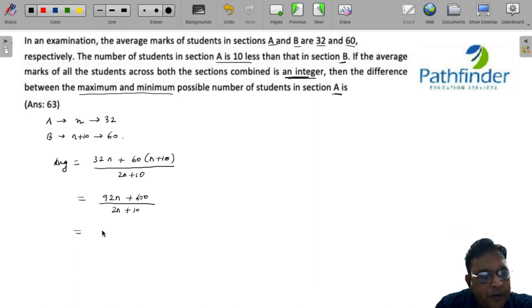You can simplify this as 92N plus 600 upon, in fact, I can write this as 2 into 46 times N plus 300 upon 2 into N plus 5. The 2s cancel out. So which means your average is 46N plus 300 upon N plus 5.